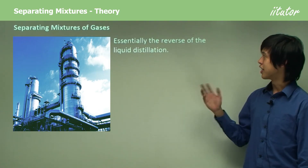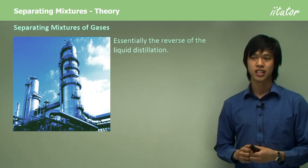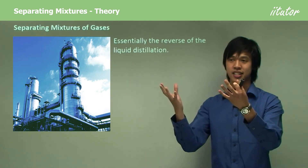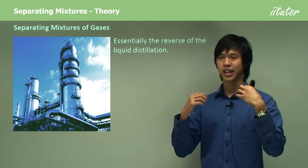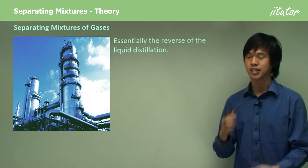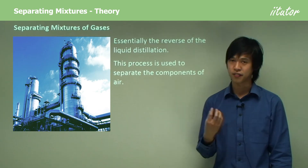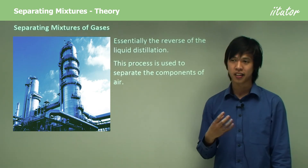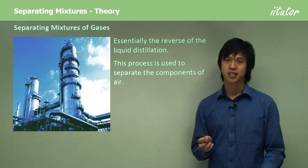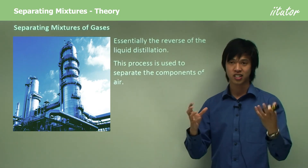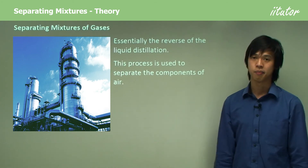So it's essentially the reverse of liquid distillation — instead of heating to turn a liquid into a gas, we cool to turn a gas into a liquid. This process is used to separate the components of air. For instance, to get liquid nitrogen, you condense the nitrogen into liquid, take it away, and that leaves oxygen and whatever else is in the air.